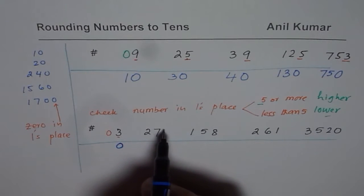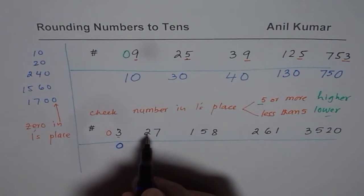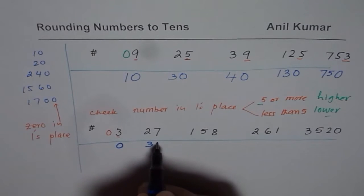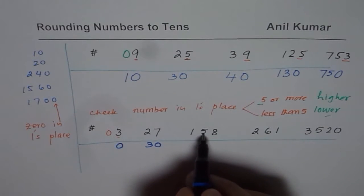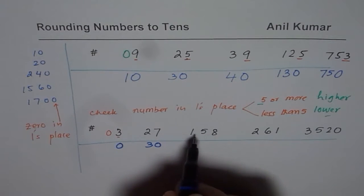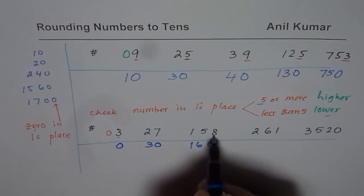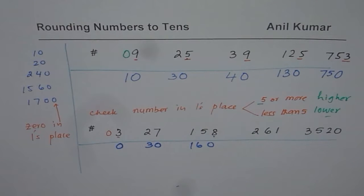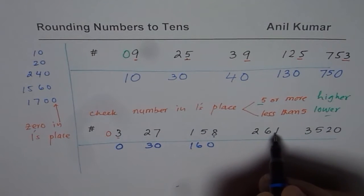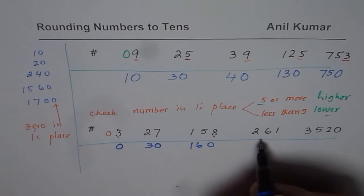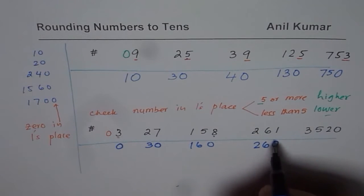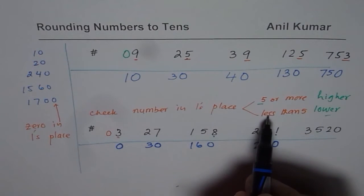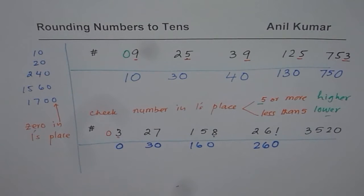7 is 5 or more. So it rounds higher. Instead of 27, we'll write 30. 158. Should I round it to 150 or 160? 160, of course, since this number is 5 or more. 261. 261 could be rounded to 260 or 270. It is closer to 260. We'll round it to 260. And you see, 1's place is less than 5. So it rounds lower.